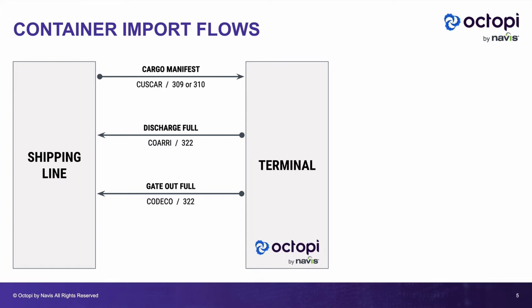So that container has now gated out full, and that import is essentially at the consignee. Eventually they may want to return the empty to the terminal. It's possible that the empty gets returned to the terminal — upon processing that gate-in empty, the terminal sends a CODECO to the line to let them know they've received the container, or a 322. But it's also possible that the empty is returned to a container depot that is completely independent of the terminal. In that case, the terminal may not see that gate-in empty move at all. To summarize the container import flow: you receive a CUSCAR for the cargo manifest, you send a COARRI for discharge, and CODECOs for gate moves.